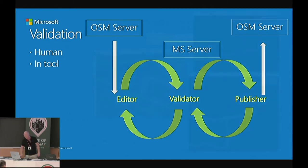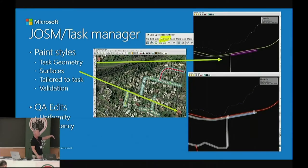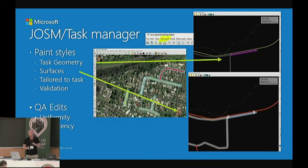Within that workflow, we developed our own internal paint styles so we could see that whatever was brought down from the Microsoft server had been given a different tag. We could look at that and see that it had been touched by the editor and verify those particular edits. This greatly speeded up the review time.